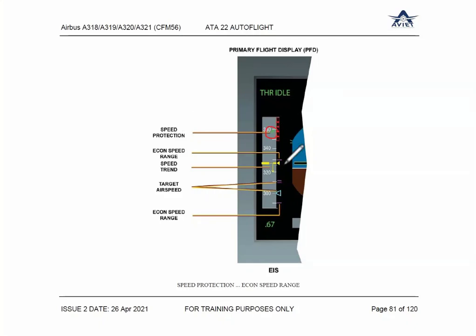All of you know that the instruments and speed indications — or any indications on the aircraft — are different from your cars. As discussed in the EIS chapter, any parameter displayed on any indicator in the aircraft has a different way of representation than normal indicators or car indicators. Here the pointer is fixed and the scale is moving.